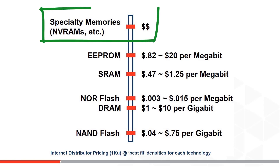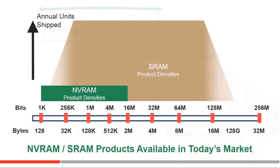For products shipping today, NVRAMs sit at the very top of the memory price scale — it does cost quite a bit more to build a RAM that is also non-volatile. If you follow our industry, you'll know there are other NVRAM projects in the press: phase change memory, resistive RAM, nano RAM, spin torque MRAM, and other lab projects that may yet change our world by driving down cost and allowing bigger densities for NVRAMs.